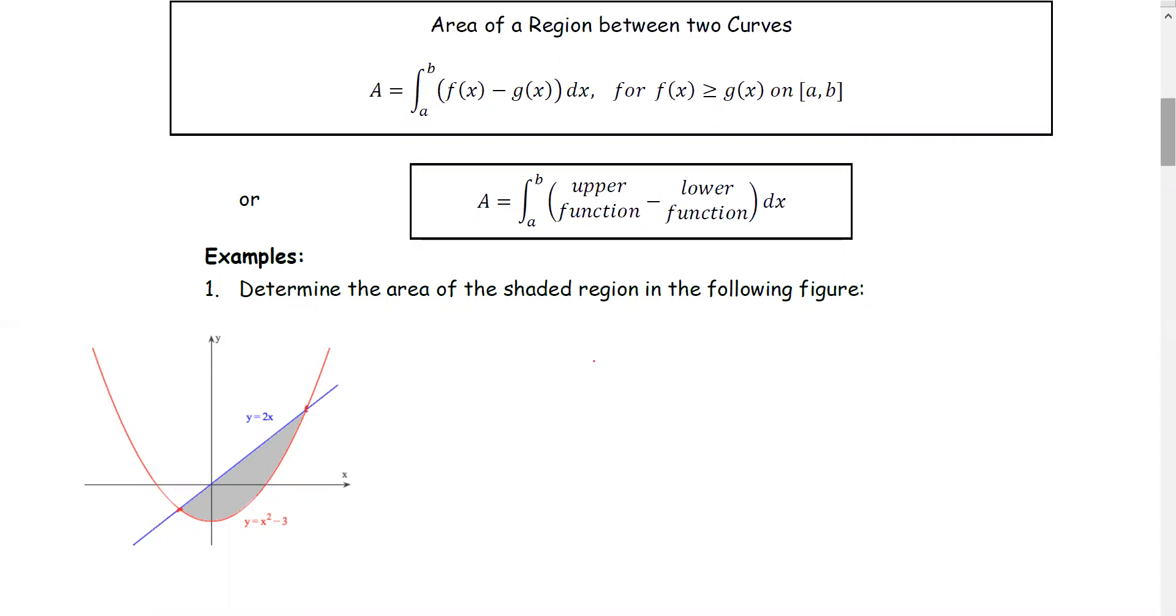First of all, we are going to find the intersection point, which is the lower bound and the upper bound of the graph.